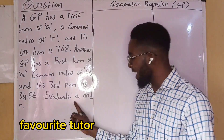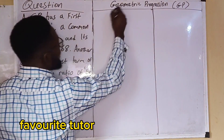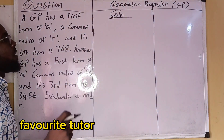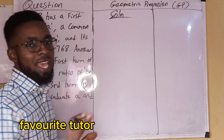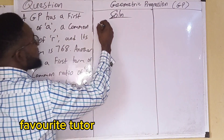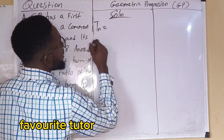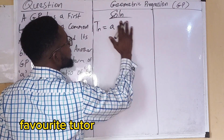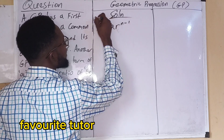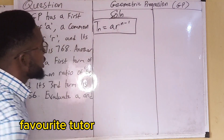We are solving for A and R. Now, for any term in a GP, the formula for the Nth term in a GP is given as: A·R^(N−1).